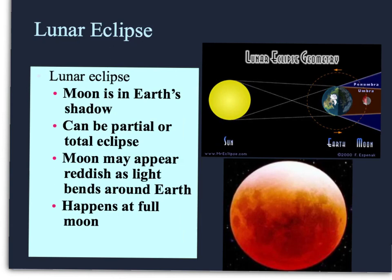Now a lunar eclipse is where the moon is on the opposite side. So the moon is in the earth's shadow. So you have sun, earth, and then moon. So again, it can be partial or total. If it's partial, it's in the penumbra or partial shadow. And if it's total, then it's going to be in the umbra or the total shadow. The moon will appear reddish as light bends around the earth, and this only happens at a full moon. Thank you so much for spending the time.